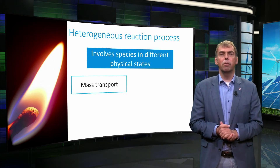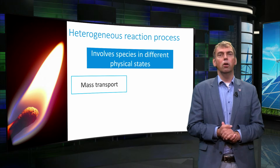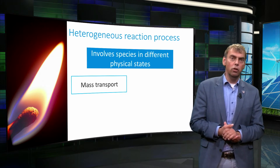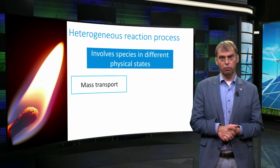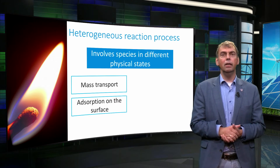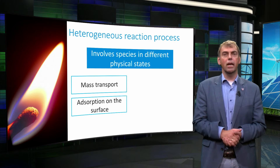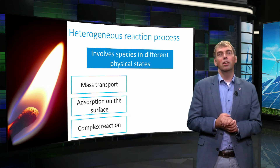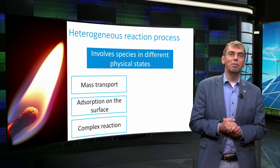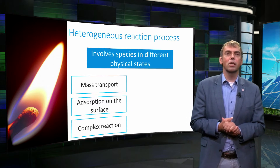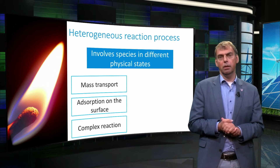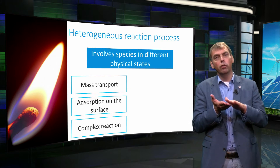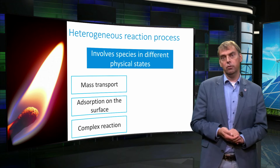First, we can discriminate the mass transport of reactant molecules to the solid surface by convection or diffusion, depending on the flow conditions. Then, the reactant molecule from the gas phase needs to adsorb on the solid surface. Following this, complex elementary reaction steps with reactive intermediates take place, involving the adsorbed oxygen molecules to the carbonaceous surface and gas phase species.